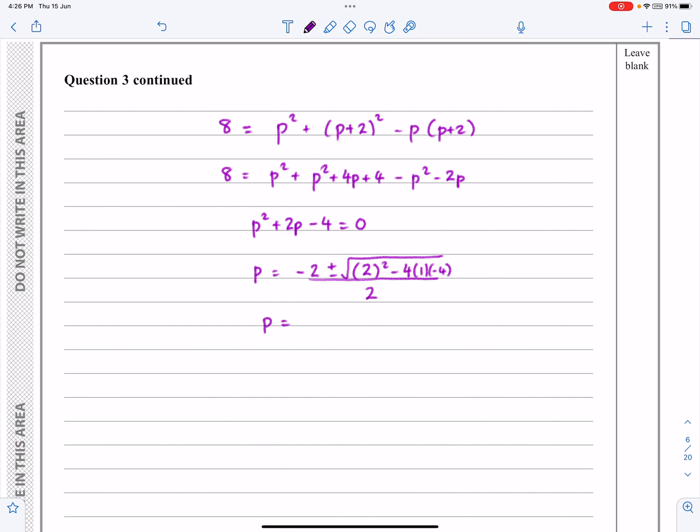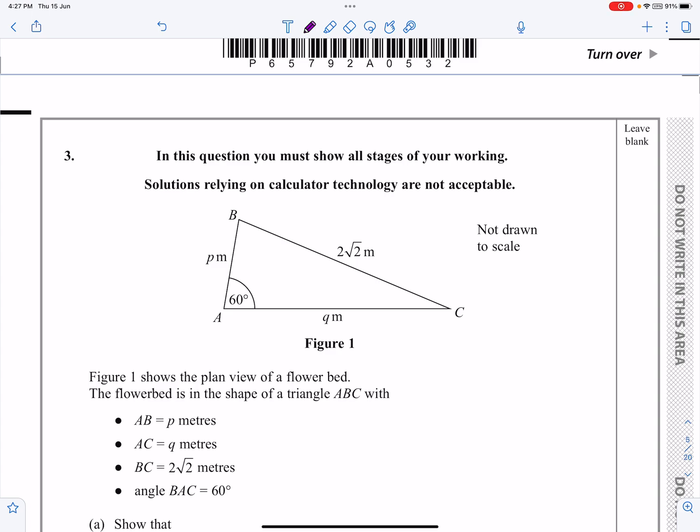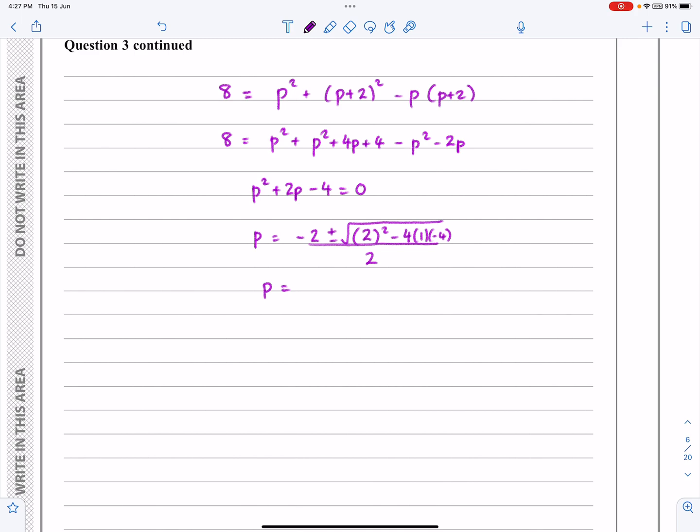Solutions relying on calculator technology are not acceptable, so do not just put this straight in as an answer on the calculator. Take a little bit of time to do this. This is -2 ± √(4 + 16) = -2 ± √20 over 2, which is -2 ± 2√5 over 2, which gives me -1 ± √5 here.